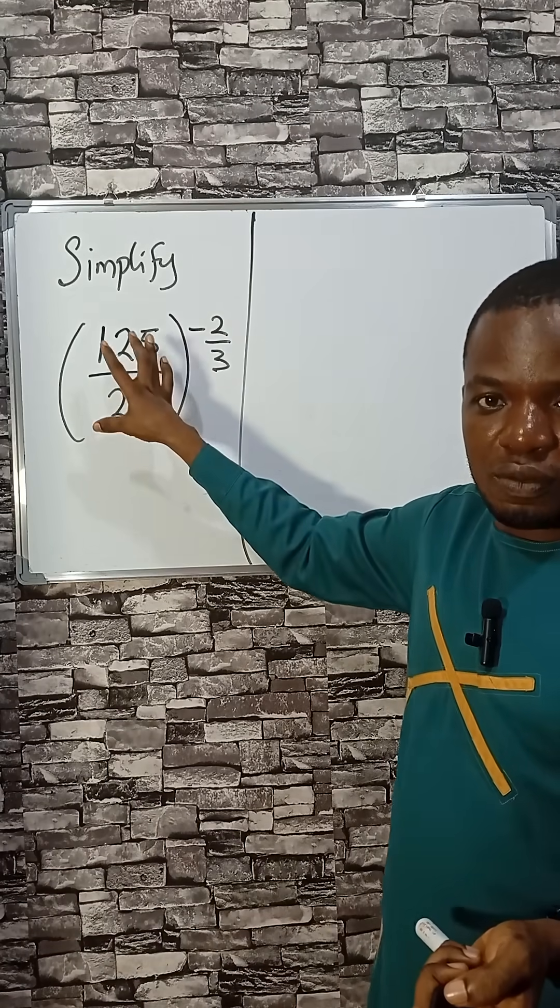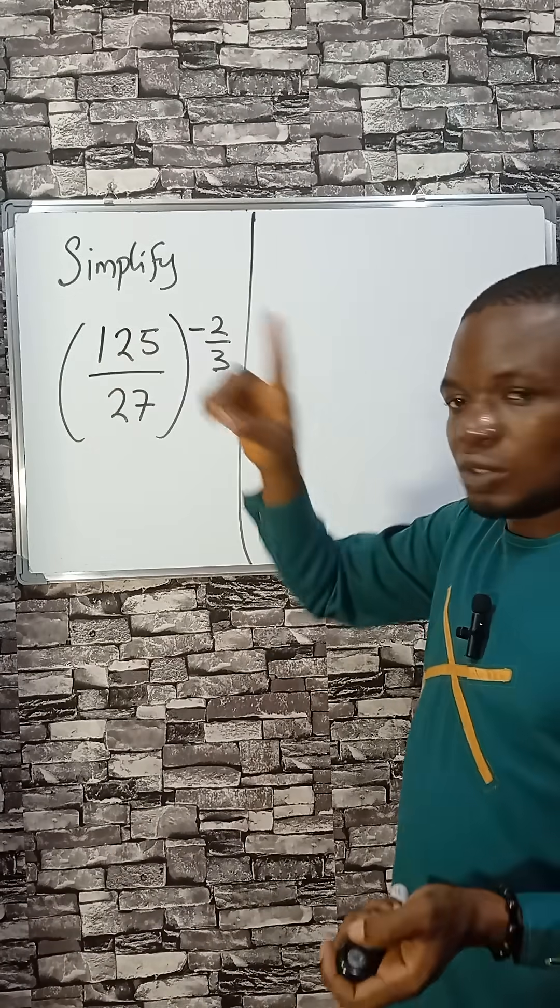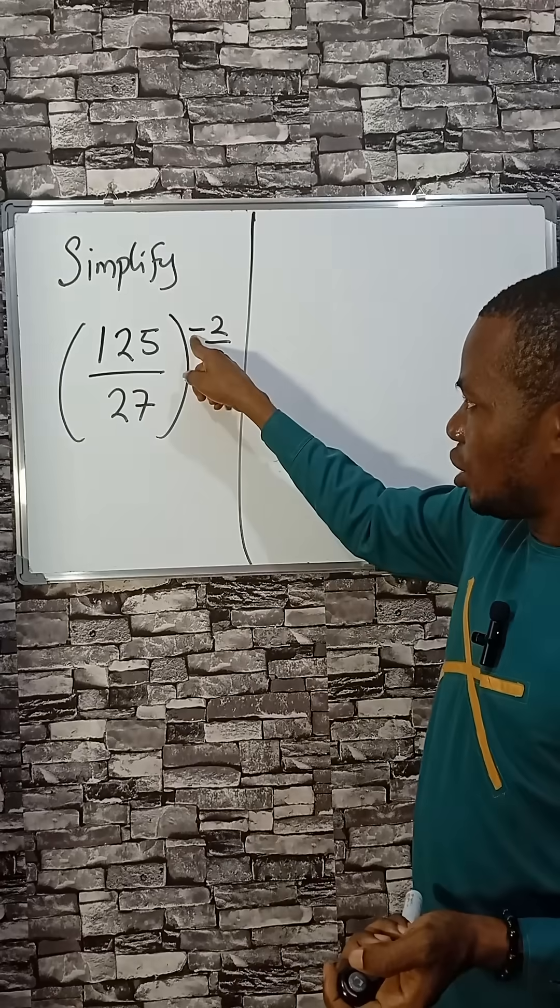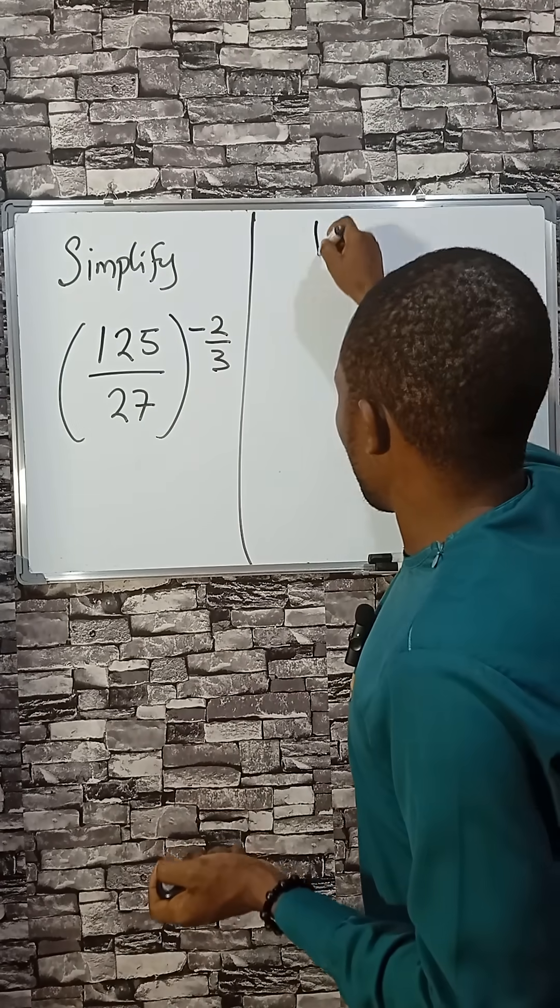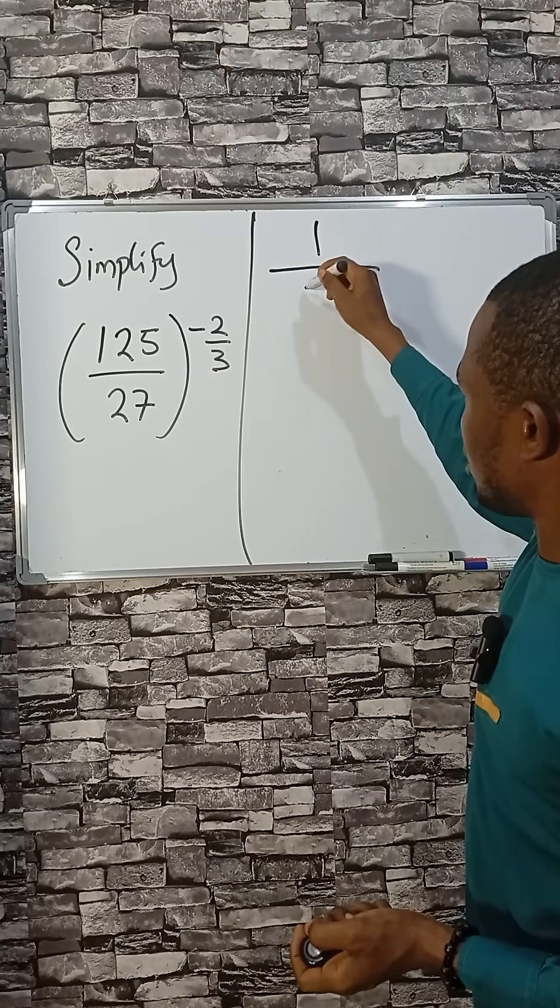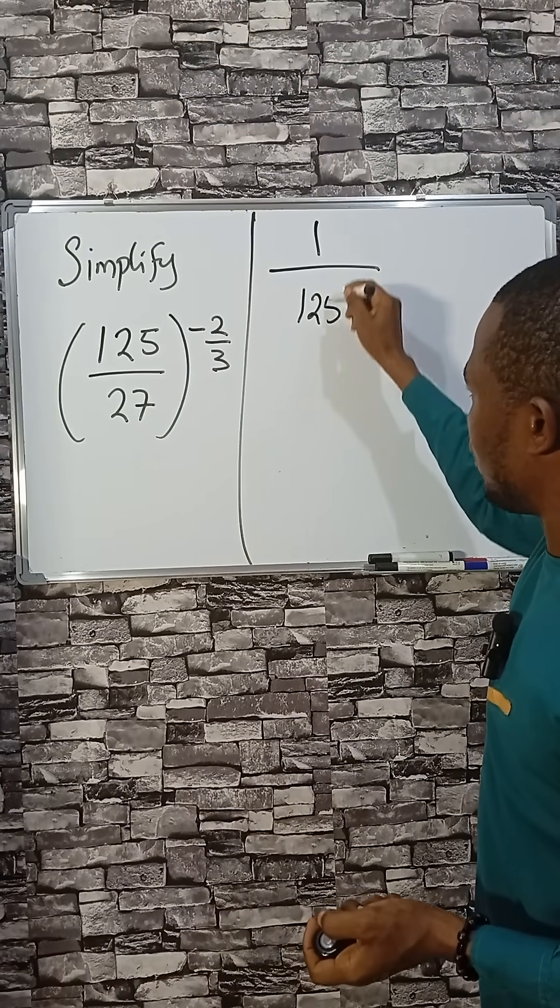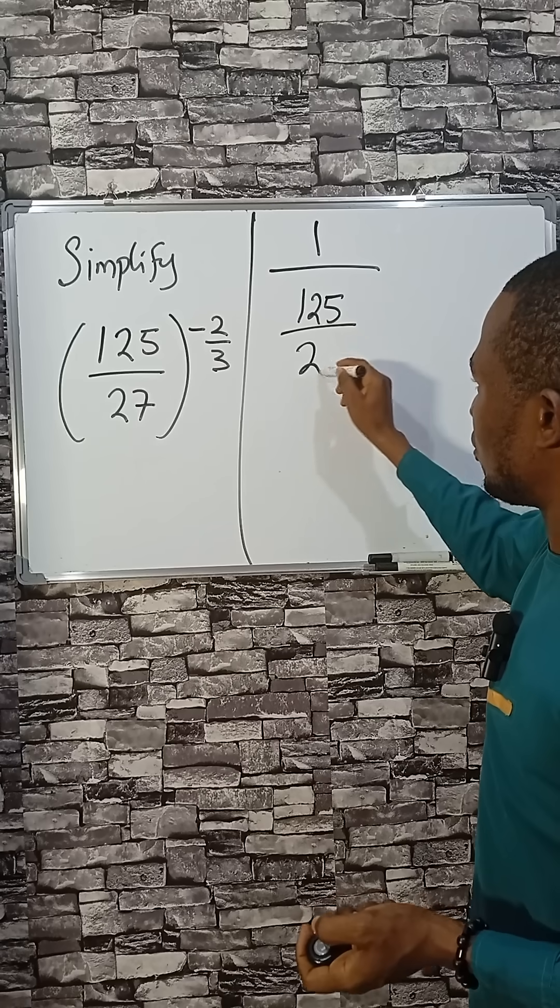Set the inverse of this expression so that the minus sign here will go. If that happens, we have 1 divided by the expression, that is 125 divided by 27.